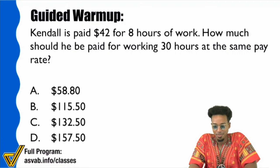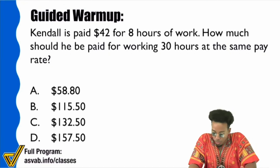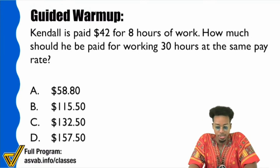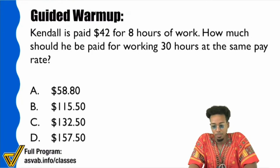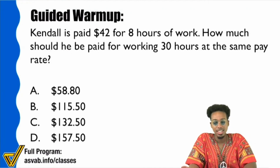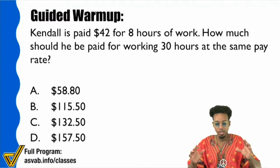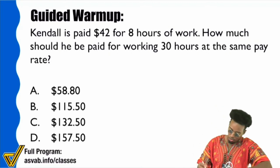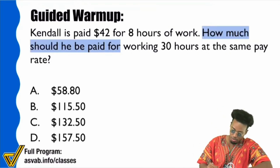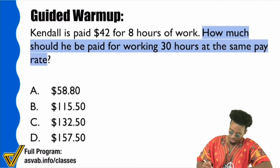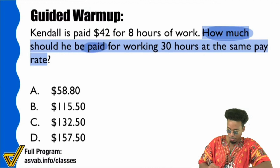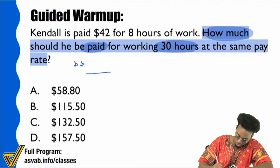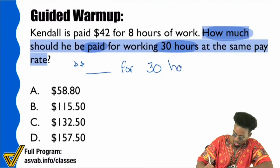I see some people saying 'a toll,' 'the amount he should be paid,' 'pay rate,' 'rate of the same pay.' Akilah said it the best — the best short version I've gotten so far. What Akilah said was 'payment for 30 hours.' The question sentence is: how much should he be paid for working 30 hours at the same pay rate? I'm going to say 'blank dollars for 30 hours.'